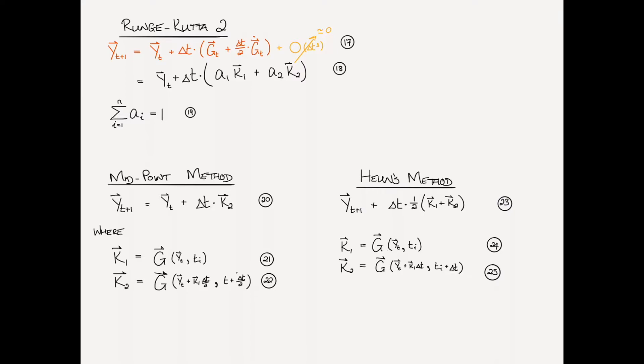These two methods are the midpoint method and Heun's method. I assume I'm pronouncing that correctly. In the case of the midpoint method, we say that the average slope is given by K2. And the way that we find K2 is we first find K1, which exactly as before we take the slope at the start of the interval.